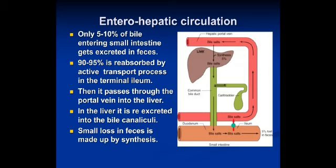Enterohepatic circulation uses a large mass of previously synthesized bile acids that pass through hepatocytes to generate bile flow, making bile acids available again to facilitate digestion. Only 5 to 10% of bile entering the small intestine gets excreted in feces; 90 to 95% is reabsorbed by active process in the terminal ileum, then passes through the portal vein into the liver, where it is re-excreted into the bile canaliculi. The small amount lost in feces is made up by synthesis.